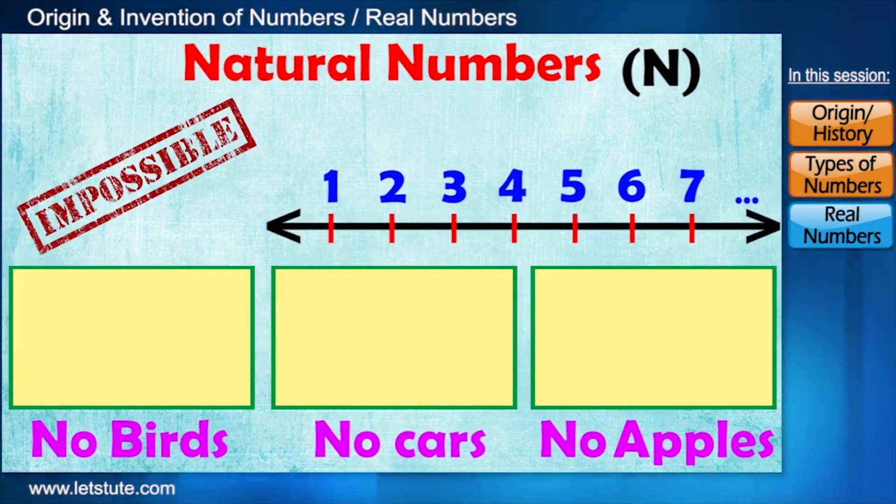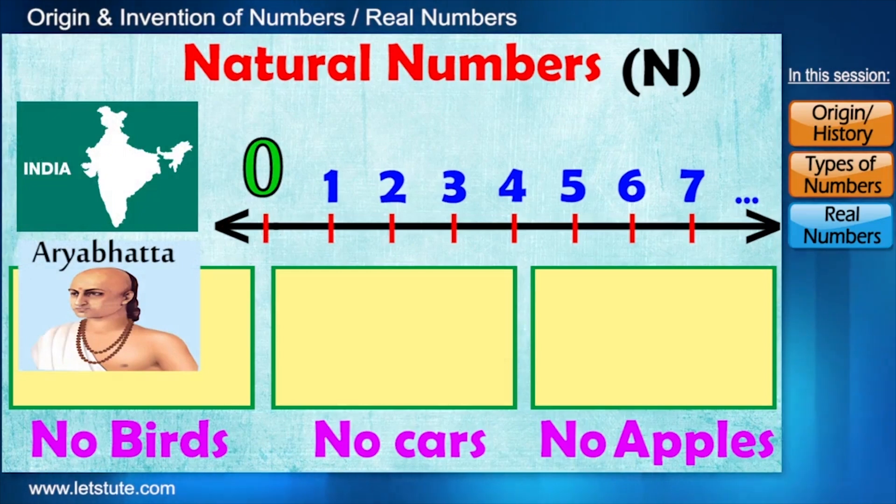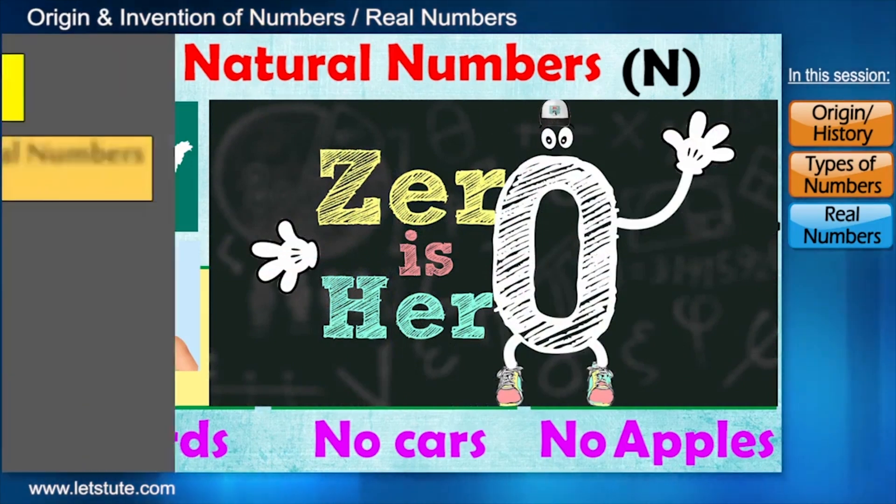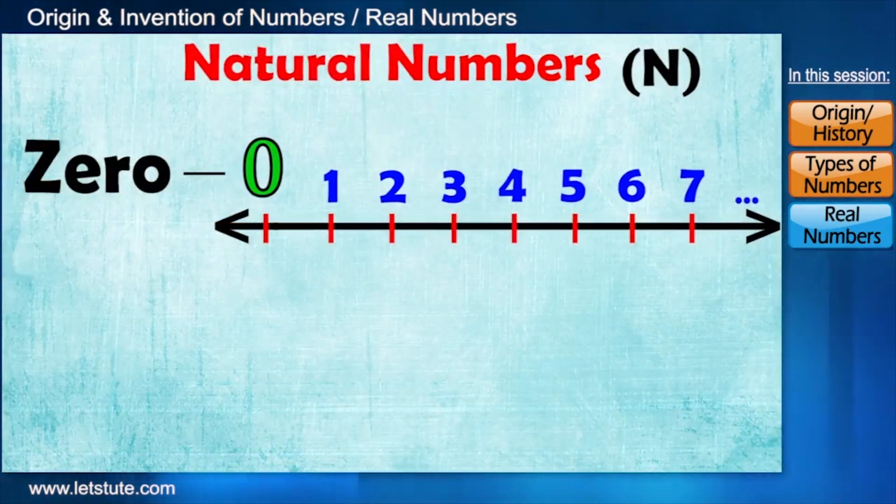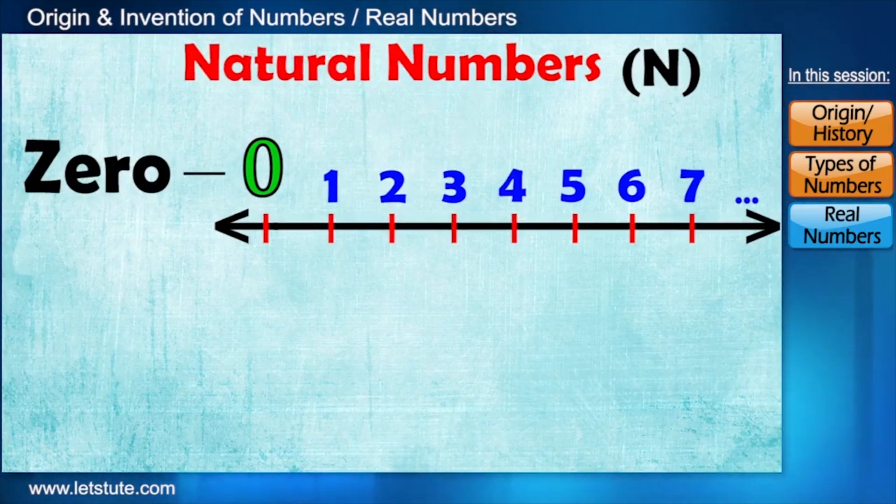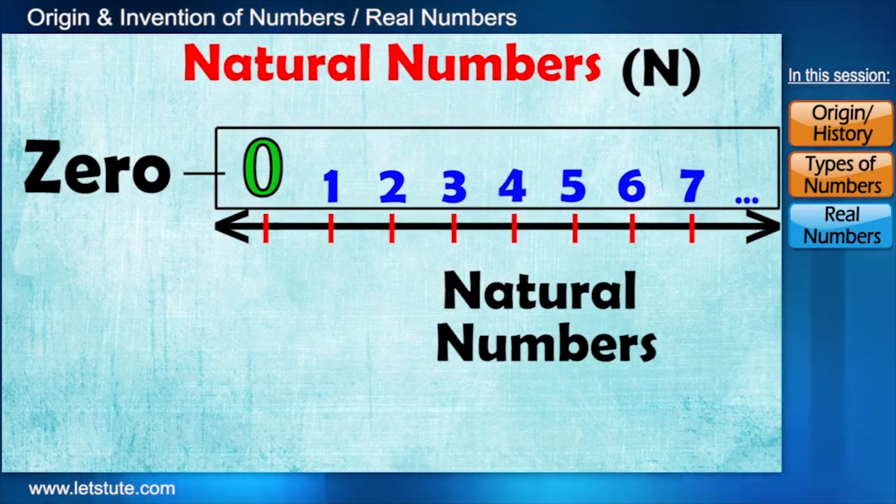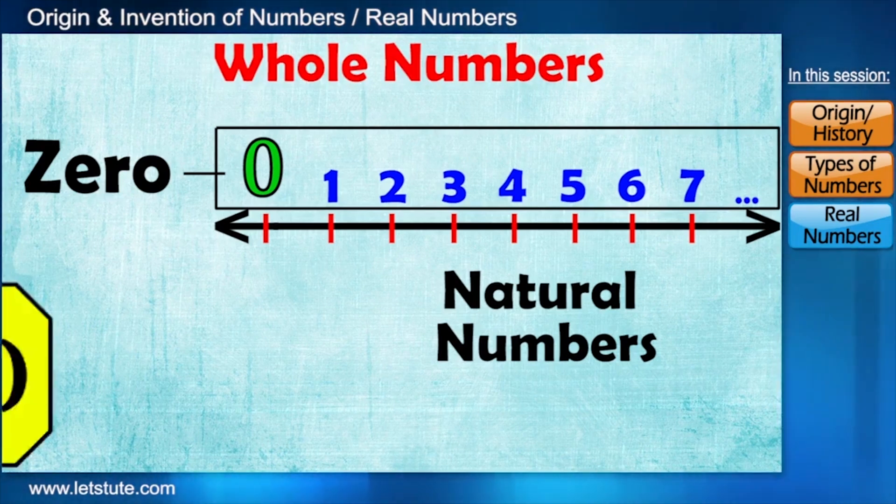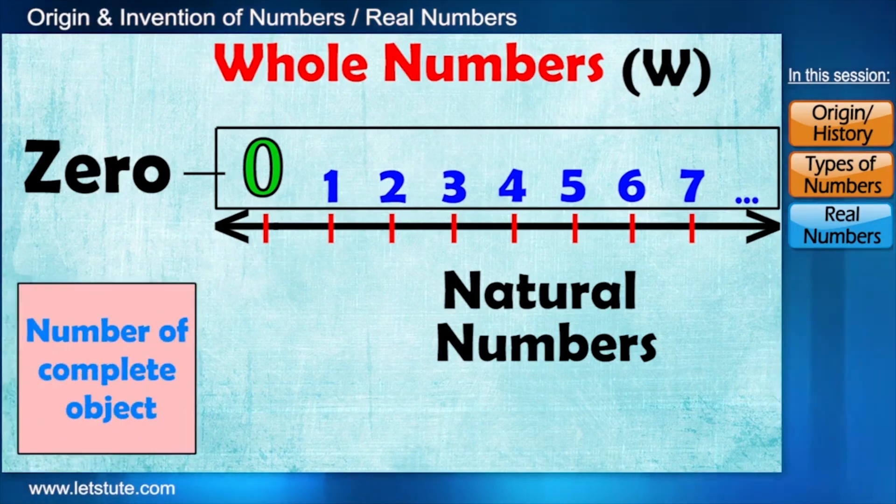So here comes the need of a number called 0. Zero was invented in India and is used to represent nothingness. You can check out our exciting session completely dedicated to this amazing number. Now when 0 was introduced, we got a new set of numbers, which includes 0 and set of natural numbers. And this whole new set is again named as whole numbers, denoted by the letter W. They are called whole in the sense that it's the number of complete object.